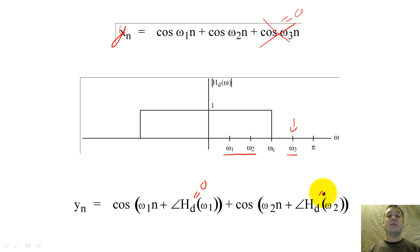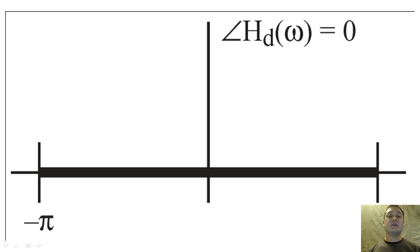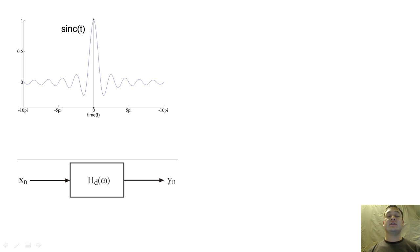In order to achieve such a low-pass filter with zero phase, the impulse response would need to be an infinitely long sinc function. The ideal low-pass filter would need to be non-causal and have an infinite number of delays and advances. Since this is impractical, we will often have to accept an approximation of the ideal low-pass filter.